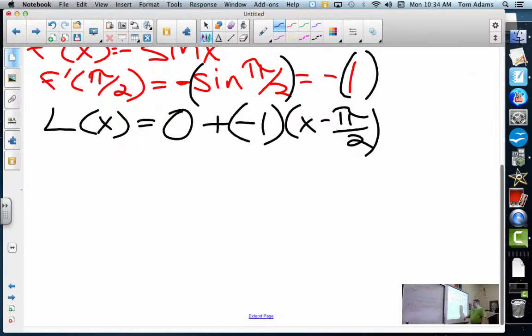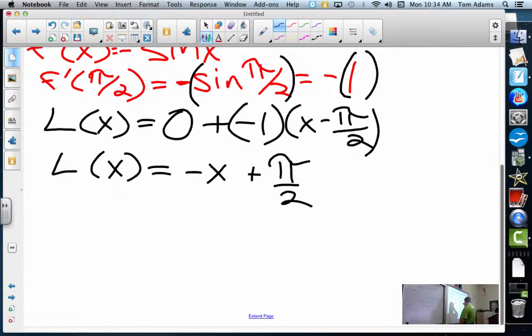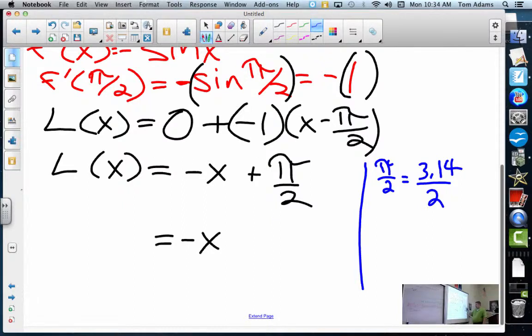So now if I push this negative 1 through for my linear approximation, I get the linear approximation is equal to -x + π/2. Now, π/2 is like 3.14/2, and that's 1.57. Does that make sense?